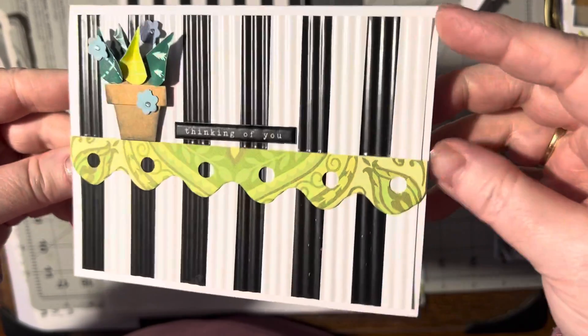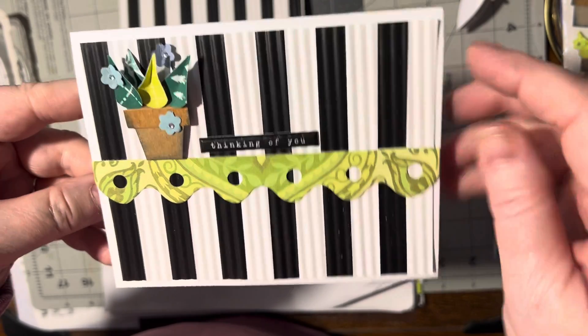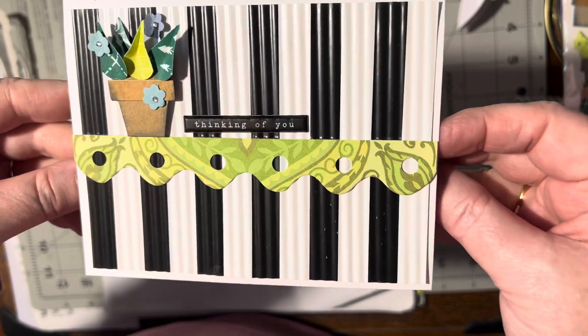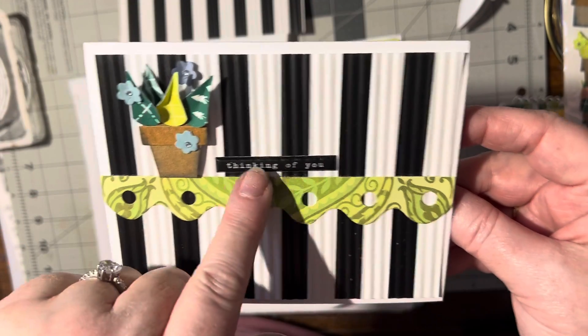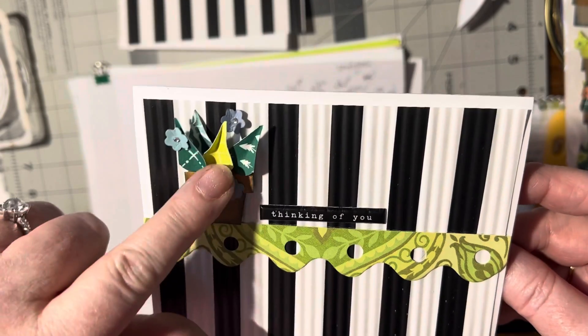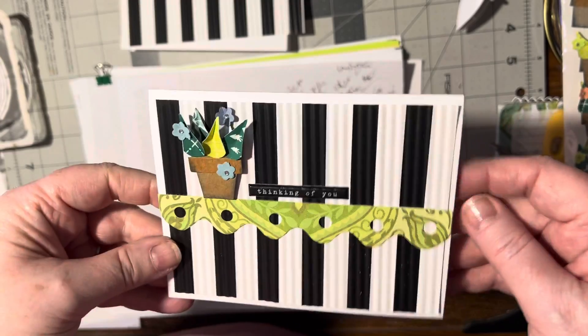I crimped it and used this long strip here that came from a paper pack. I used this little word strip that I got in a mystery box, and the succulent plant I made. So I figured I need one more, so I'm going to go ahead and make the same one.